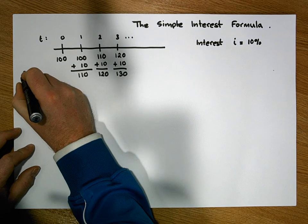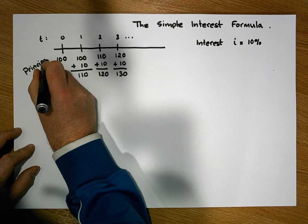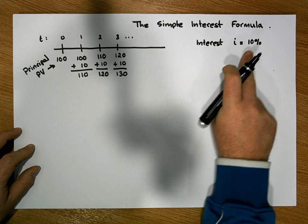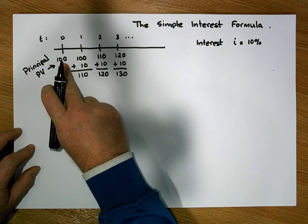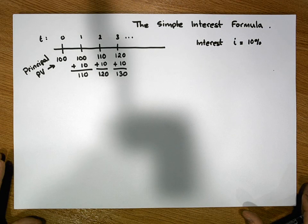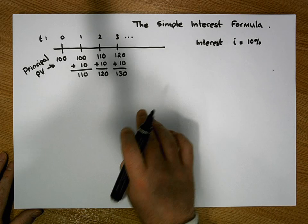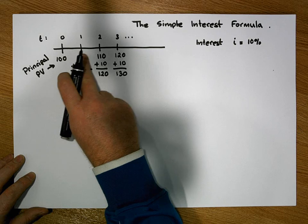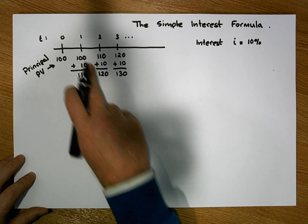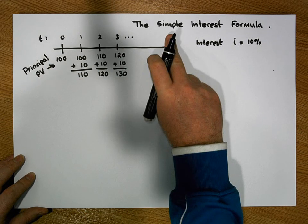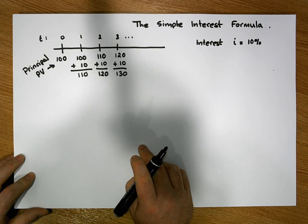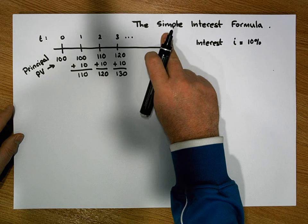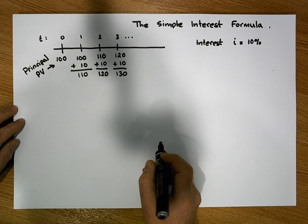Let's call our principal investment the principal value, PV. Each period we receive I percent of PV — in this case 10% of €100. Now let's try to generalise a formula for calculating the future value of an account where interest is applied using a simple interest method.